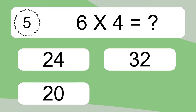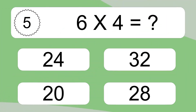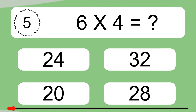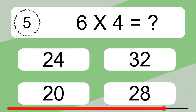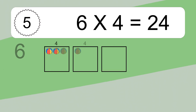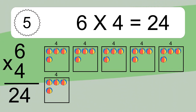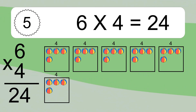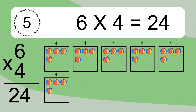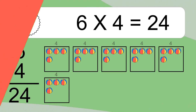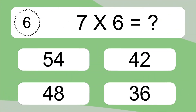Six times four equals 24. We have six boxes and each box has four colorful balls inside. If you count all the balls in all the boxes together, you will have six times four balls. This equals 24 balls.